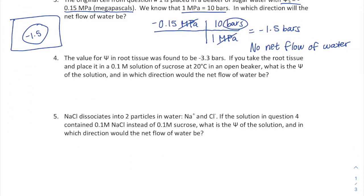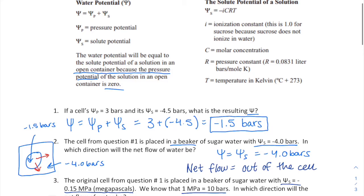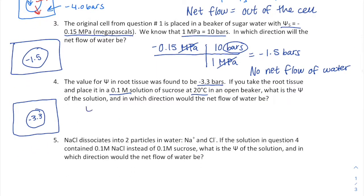Question four: we are given the water potential of root tissue at negative 3.3 bars and told it's placed into a solution. We're given the molarity and temperature of the solution, which is a clue that we'll use the solute potential equation: solute potential equals negative iCRT.